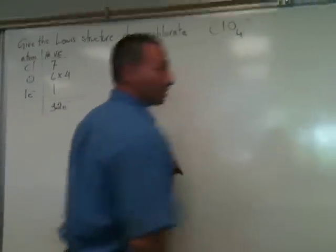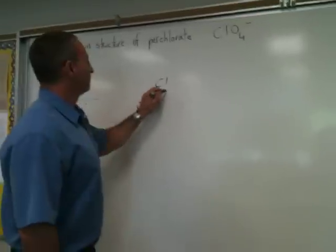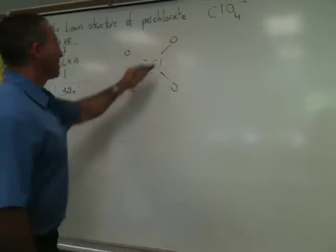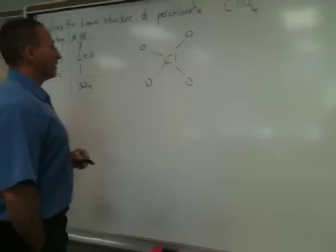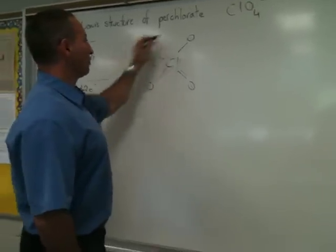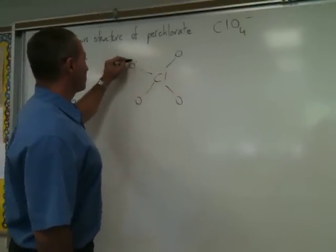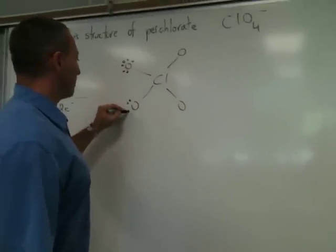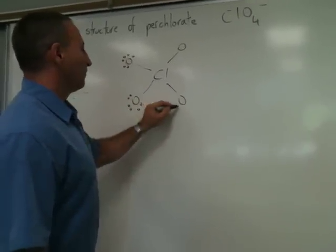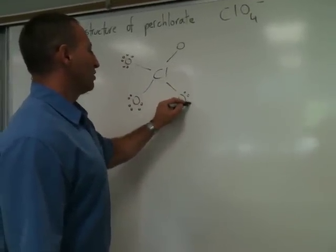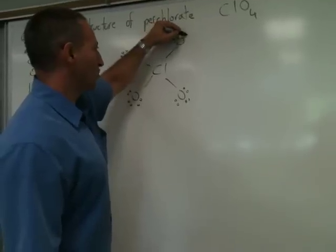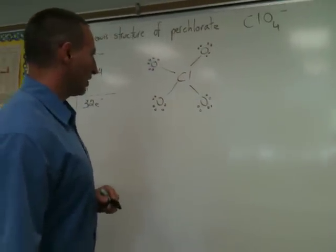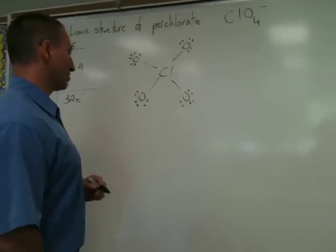We'll begin by drawing a chlorine atom and the four oxygen atoms attached to it. That uses up eight electrons, so now we have to account for another 24. Four times six is 24, so we can start by drawing six electrons around each oxygen atom. This will make a structure with several formal charges, which we can then modify to give the final correct Lewis structure.